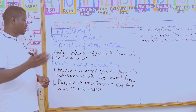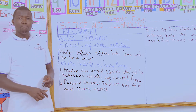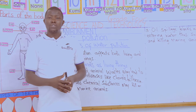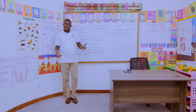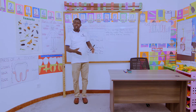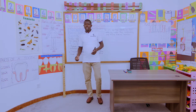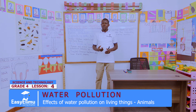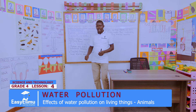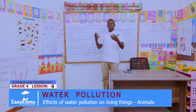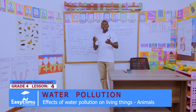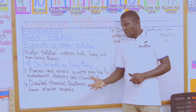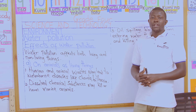Number two: dissolved chemical substances may kill or harm marine animals. When we use excess fertilizers in our farms, these fertilizers, during rainfall, leach through the soil and the water carries those chemicals into water bodies. What will happen? There is suffocation and harming of the aquatic animals — the marine animals living inside that water. Animals like fish that cannot live outside water will be harmed and killed.